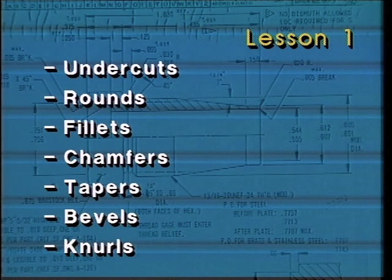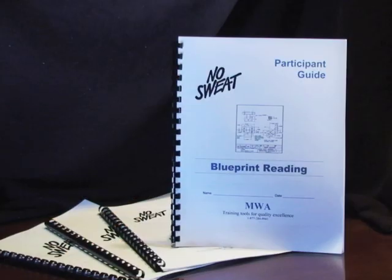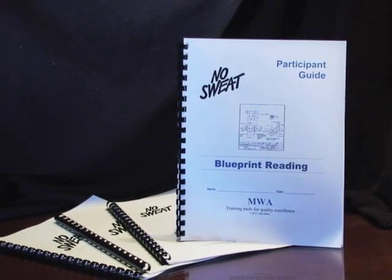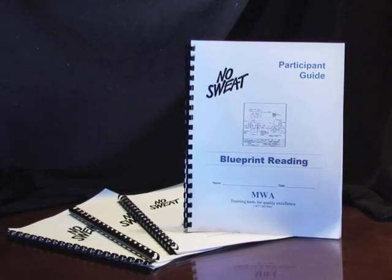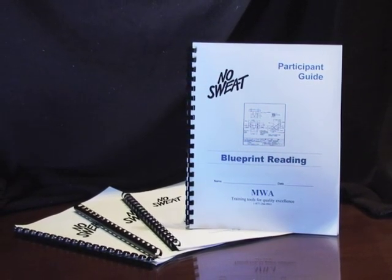This completes the videotape portion of Module 2, Lesson 1, Special Part Features and Configurations, Part 1. Stop the tape now and complete the exercises in your No Sweat Blueprint Reading Participant's Guide before viewing Lesson 2.